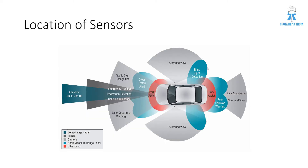If you see this diagram, you can understand the availability and location of sensors in and around the car. From left to right: adaptive cruise control is marked in green, which is the short or medium range radar. Emergency braking, pedestrian detection, and collision avoidance are marked in dark ash color, which is called LiDAR.